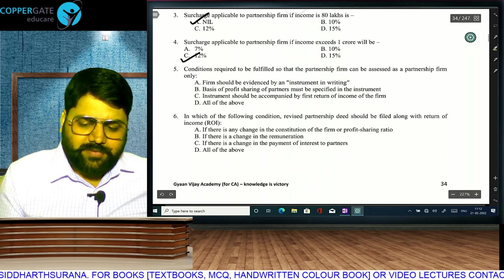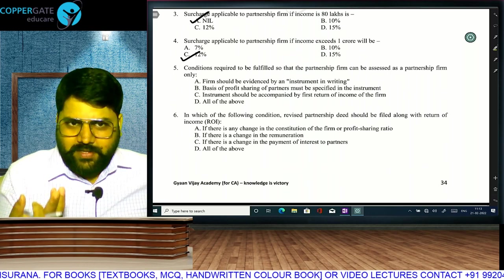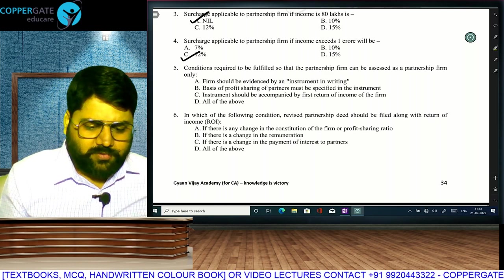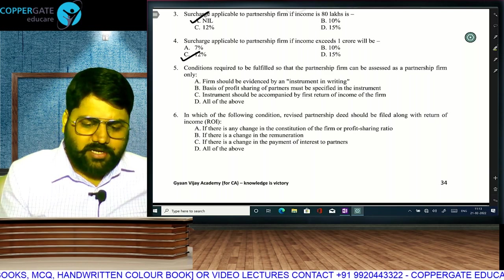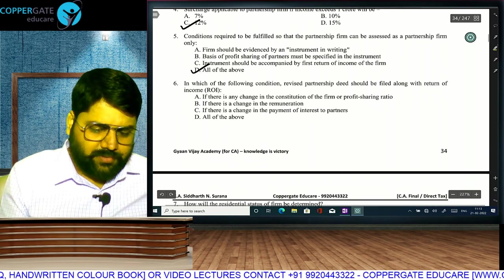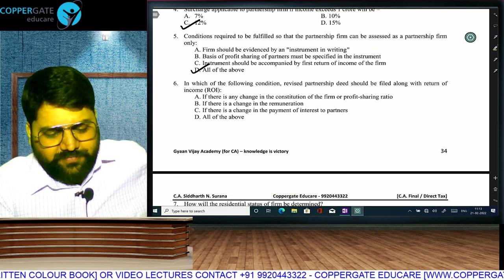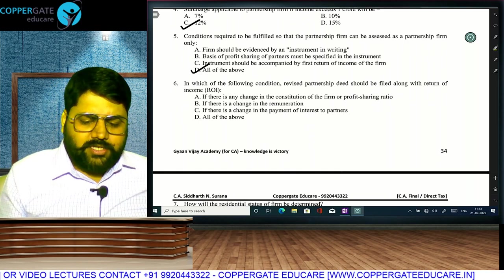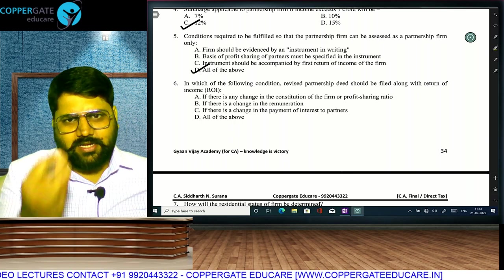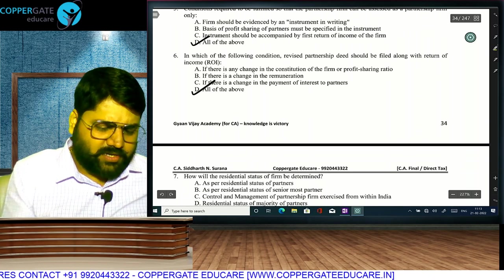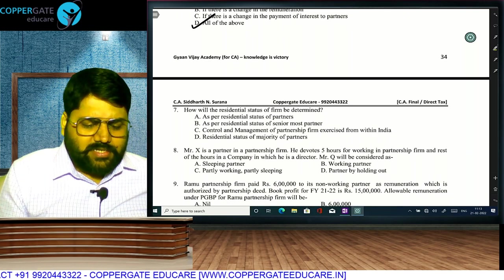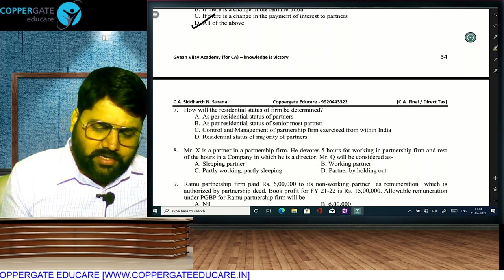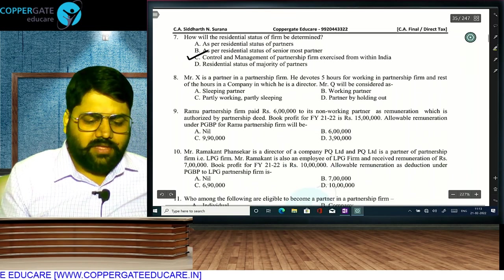Conditions under section 184 for a firm to be assessed as a partnership firm: deed in writing, copy of deed submitted to income tax department, manner of sharing profit specified. If there is any change in constitution, remuneration, or profit sharing ratio, a revised deed must be filed with the return. Residential status of a firm is determined by control and management: if exercised from within India, it is resident.